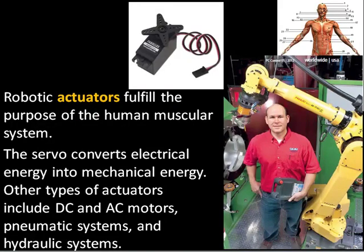The second area of study among the four fundamental robotics topics is single joint control. Each joint of the robot has some kind of actuator that allows that joint to move. The robotic actuators fulfill the purpose of the human muscular system. Most actuators that we will use in robotics convert electrical energy into mechanical energy. By adjusting the electrical properties, such as voltage and current, we can adjust the speed, acceleration, and position of the actuators.